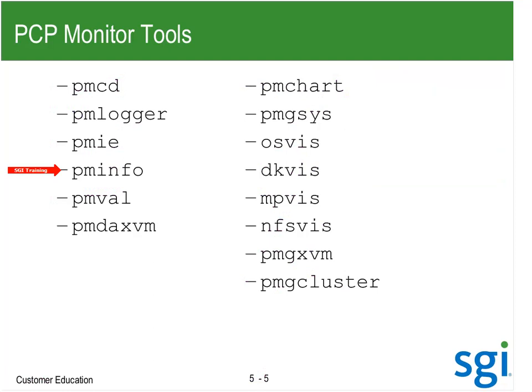PMVal will give me a raw value — an ASCII interface for a metric. And a PMDA — performance metric domain agent — is able to add statistics into PCP.